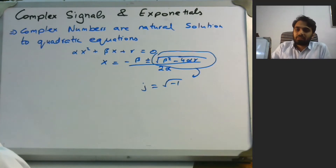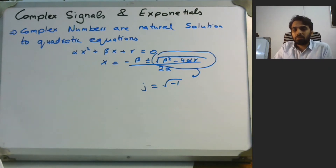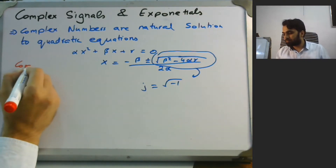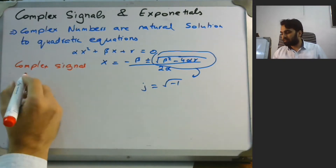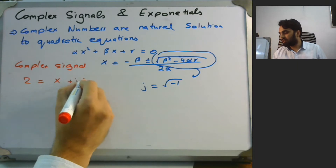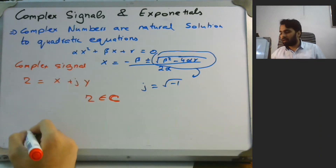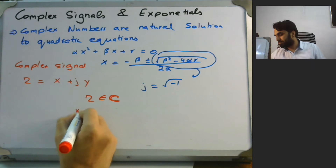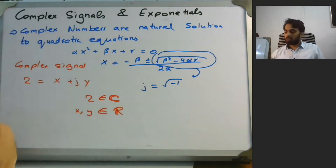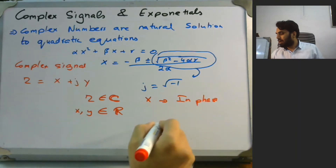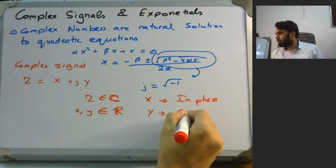In the same way, we have complex signals, and complex signals are basically an easy or convenient way to understand different types of signals such as underwater sonar, ultrasound applications, and many other signal processing applications. Say we have a complex signal z which is equivalent to x plus j y, where z is a complex number and x and y are real. x is referred to as the in-phase component and y is referred to as the quadrature phase component.